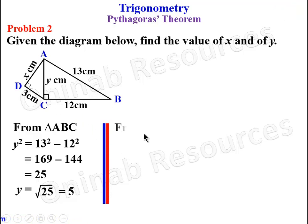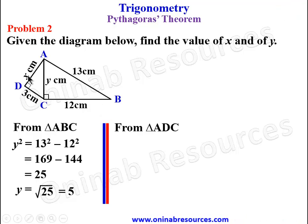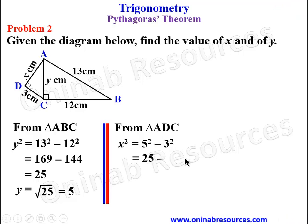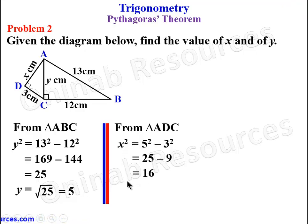From triangle ADC, AC — which is Y — is the hypotenuse, and X is one of the other two sides. Therefore X squared is equal to the square of the hypotenuse minus the square of the other side: 25 minus 9, which gives 16. So X is the square root of 16, giving 4. We are done with problem 2.